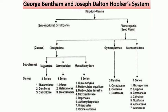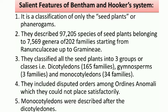Now we shall see some of the salient features of Bentham and Hooker's system — the basic characteristics and on what basis they made this classification. First, this is a classification only of seed plants or Phanerogams — gymnosperms and angiosperms. Second, they described 97,205 species of seed plants belonging to 7,569 genera of 202 families, starting from Ranunculaceae up to Gramineae.